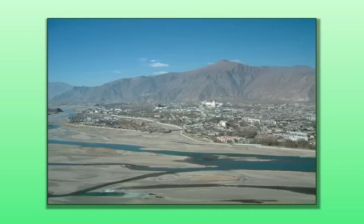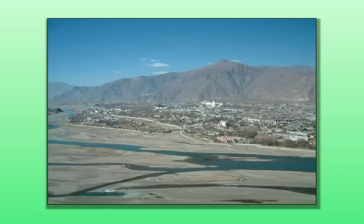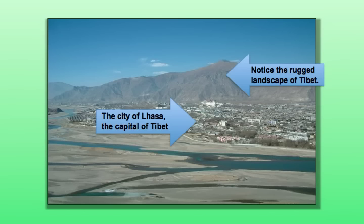Here's a photo of the city of Lhasa, which is the capital city of Tibet. Notice in the background that we do have mountains — we do have some elevation within the plateau. A plateau itself is not necessarily entirely flat; there will still be peaks and valleys. But what I want you to understand is the entire landscape itself is raised to a very high elevation. That's why plateaus can be challenging natural barriers to cross.